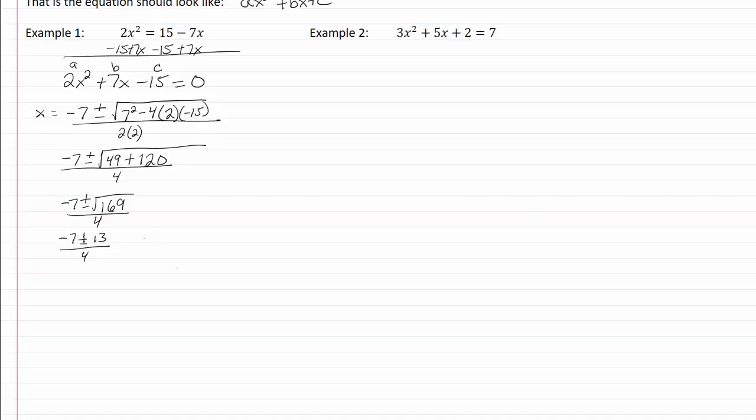I'll write that as two separate equations to make it a little bit easier to deal with. So we have negative 7 plus 13 over 4 and negative 7 minus 13 over 4. So negative 7 plus 13 is going to give me 6 over 4.